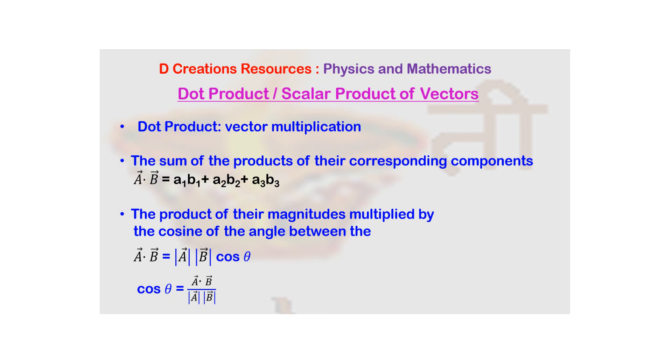Now how do you find it out? You have to take product of corresponding components and then add them all up. So basically dot product is sum of the products of their corresponding components.